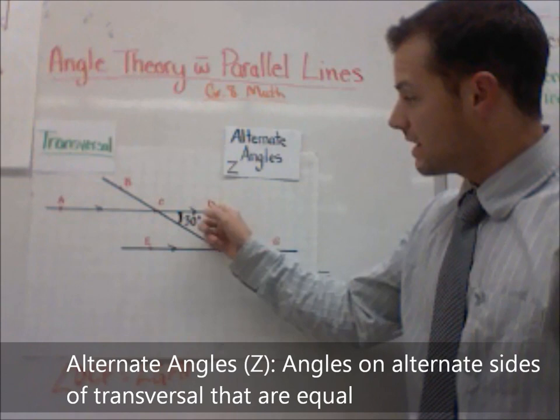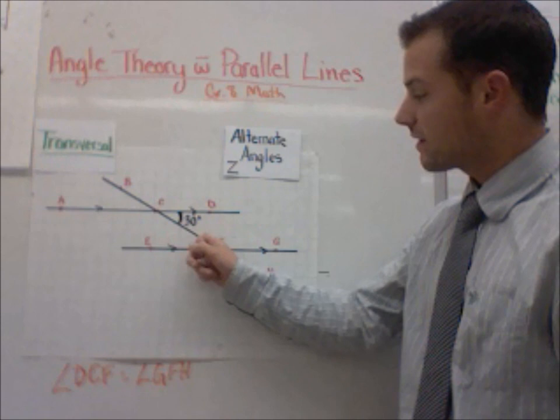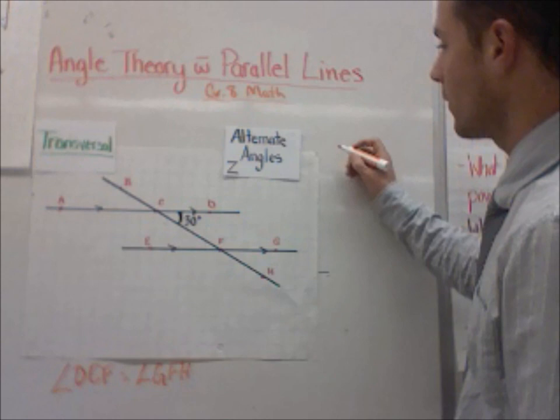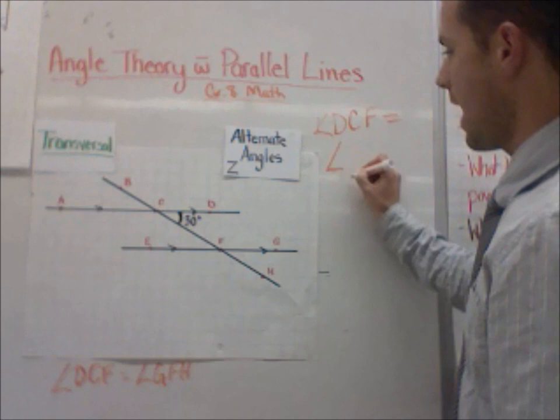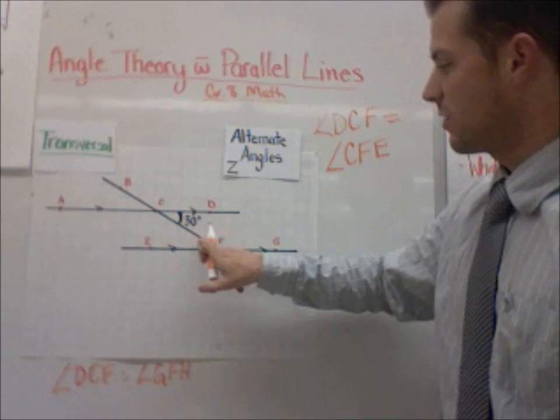So if DCF is 30 degrees, that means that CFE is also going to be 30 degrees. It's going to be this angle right here. It forms a Z pattern. So these are alternate angles, and they're equal. So we already know now the measure of this angle right here.